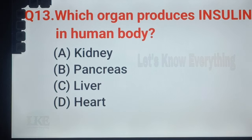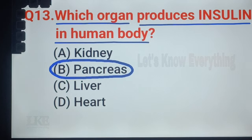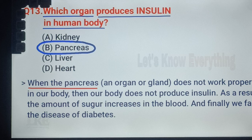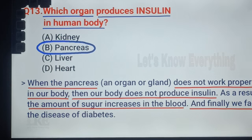Question number 13: which organ produces insulin in the human body? A. Kidney, B. Pancreas, C. Liver, D. Heart. Right answer: option B, Pancreas. When the pancreas does not work properly, our body does not produce insulin. As a result, the amount of sugar increases in the blood, and we face the disease of diabetes.